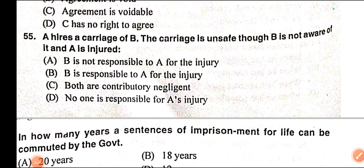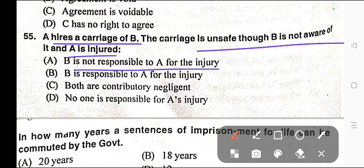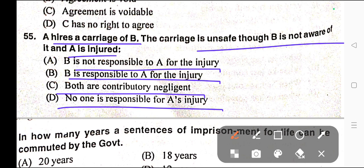Question number fifty-five: A hires a carriage of B. The carriage is unsafe, though B is not aware of it. A is injured. Options: A) B is not responsible to A for the injury, B) B is responsible to A for the injury, C) Both are contributorily negligent, D) No one is responsible for A's injury. Correct answer is option B — B is responsible to A for the injury.